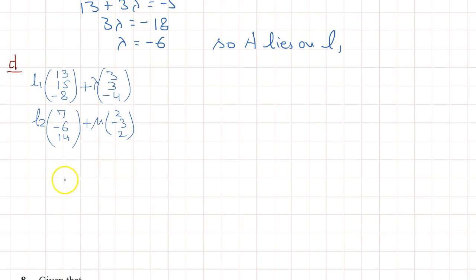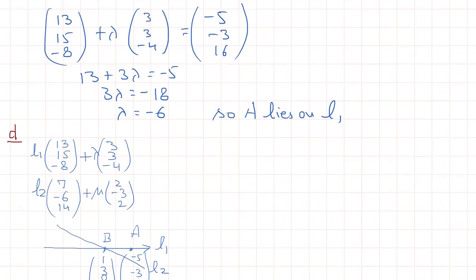These are the two lines, say this is L1 and this is L2. In the first part we have proved that they are intersecting at point B and the position vector of B is (1, 3, 8). There is another point A and the position vector of A is (-5, -3, 16). We have proved here -5, -3, 16. So A lies on L1.